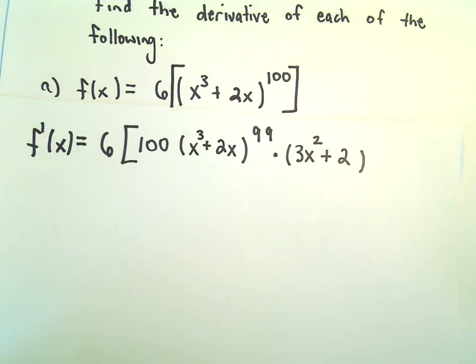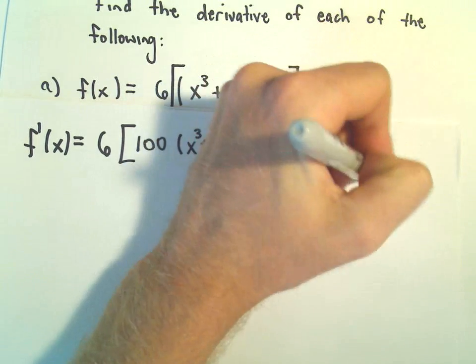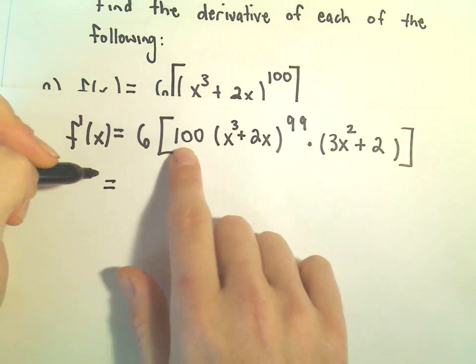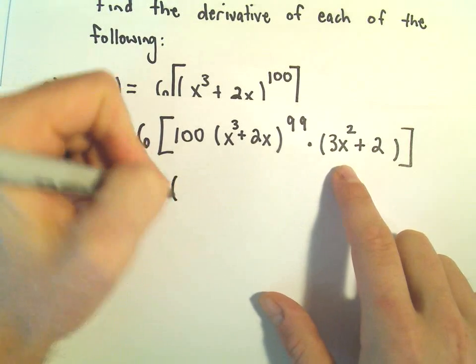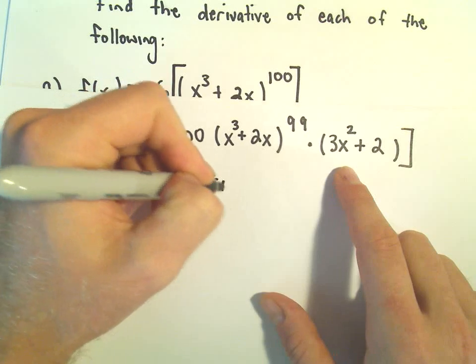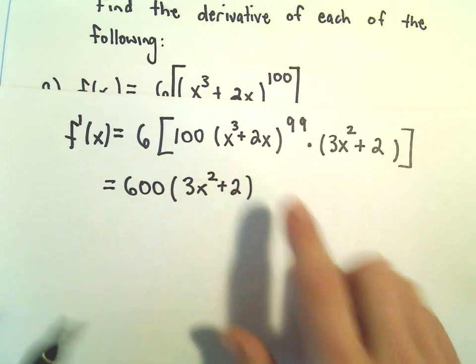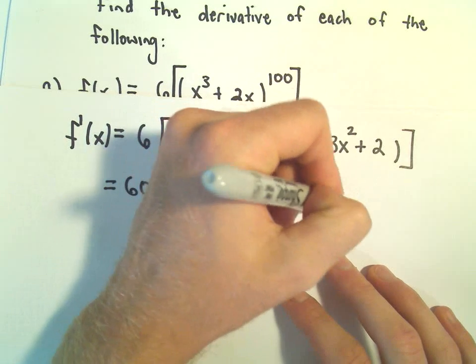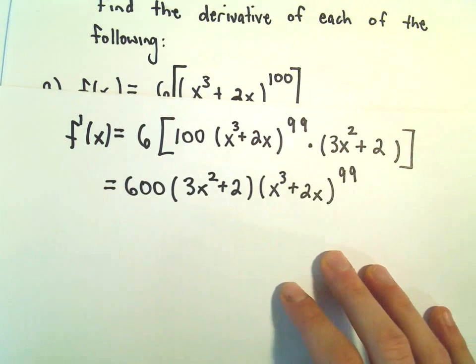And that's it. That's now our derivative. You can clean this up a little bit. 6 times 100 is 600. I'm going to write the 3x squared plus 2 part next. And then the x to the third plus 2x raised to the 99th power will be left over.